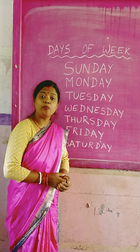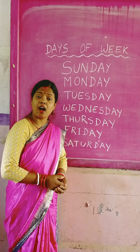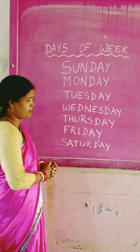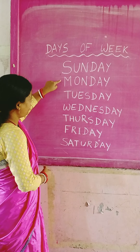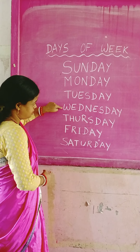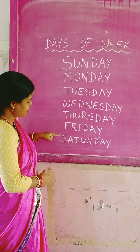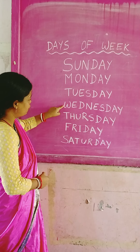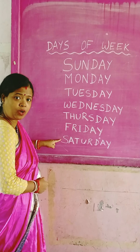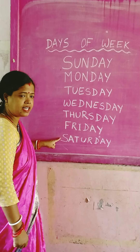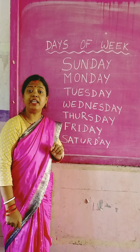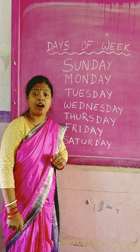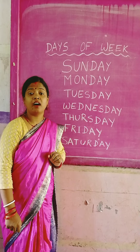How many days are there in a week? Sunday, Monday, Tuesday, Wednesday, Thursday, Friday, Saturday. How many days are there in a week? There are seven days in a week.